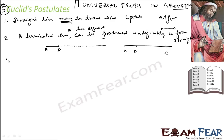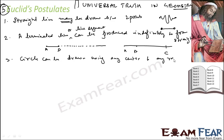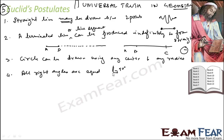The third postulate, which is specific to geometry, is that a circle can be drawn using any center and any radius. For example, you have a dot — with a radius and a center — and you can draw a circle. That is the third postulate. The fourth postulate is that all right angles are equal. Because all right angles are 90 degrees, they have to be equal. It is a universal truth specific to geometry, so it is called a postulate.